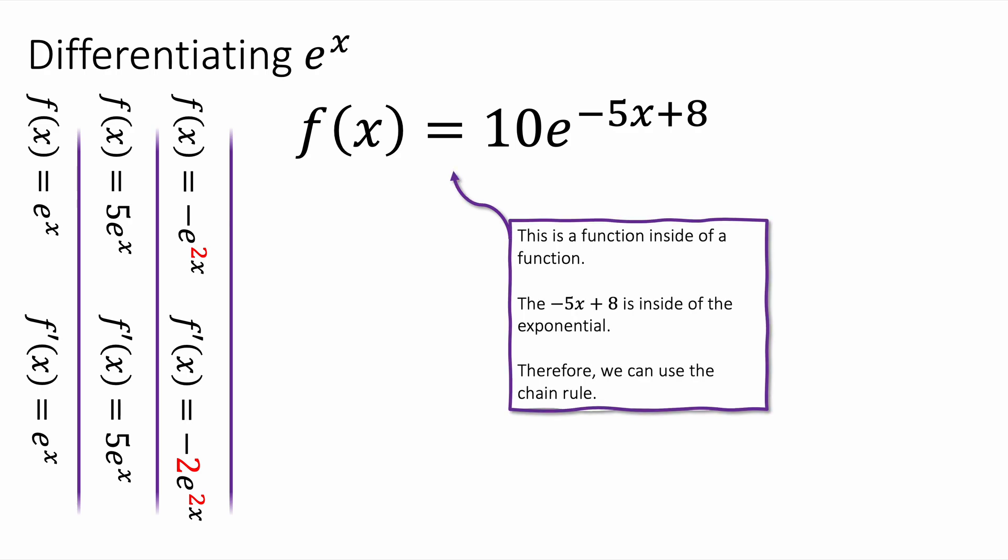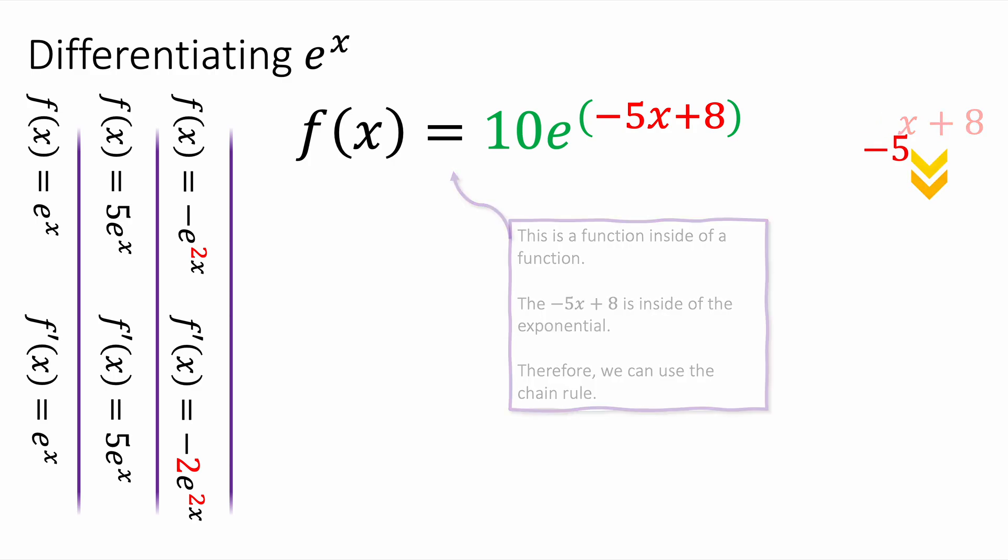Finally we've got 10 e to the power minus 5x plus 8. And this is the chain rule. The minus 5x plus 8 is inside of the exponential. Therefore, we are going to use the chain rule. Where the power is its own function and the 10 e to the power is another function. We differentiate the power and we get minus 5. Minus 5x plus 8 is differentiated by minus 5.